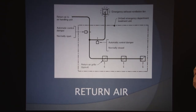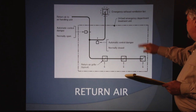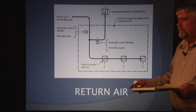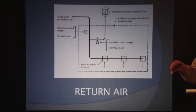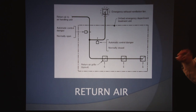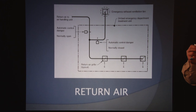Return air. Return air is air that's removed from an approved conditioned space or location and circulated or exhausted. The return air goes through the space and then gets taken out or reconditioned and put back in as supply air. When they recirculate the air it usually goes through a filter that stops any contaminants or particles in that return air.